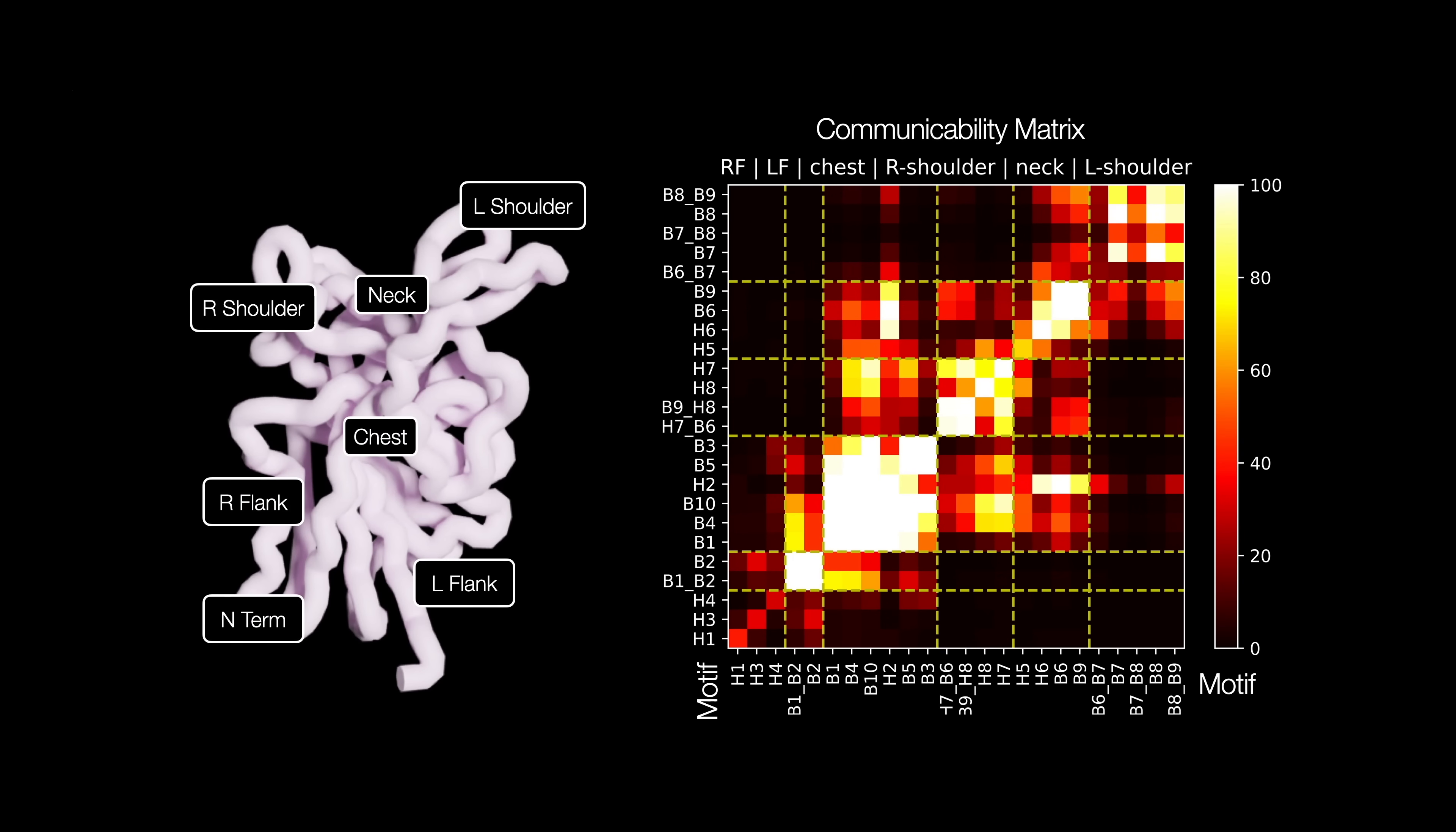If we perturb the right side, which happens to be where the drug binds, the signal will propagate through the neck. Once the neck is perturbed, the left side will react in turn. This is how the right shoulder is connected to the left shoulder.